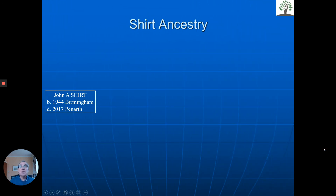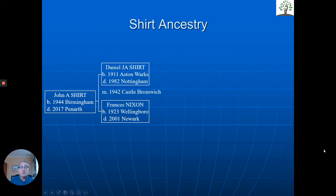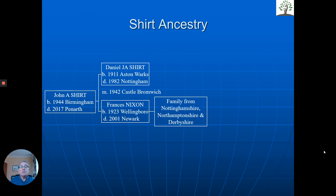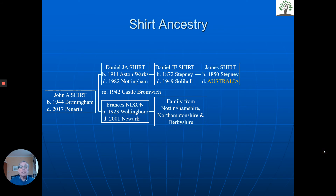Let's look at someone with a London connection. John Schertz was born in Birmingham in 1944. His parents, Daniel and Francis, were born in the Midlands — the Nixons were from Nottinghamshire and Northamptonshire. Going back in time, Daniel's father was born in Stepney, in the East End of London — there's the London connection. His father again was born in Stepney, and in fact we traced back to the early 1700s, with Southwark also in London. James had emigrated and died in Australia, a very interesting story — and we were able to trace relatives in Australia.